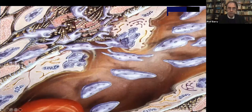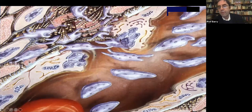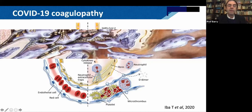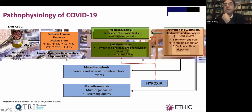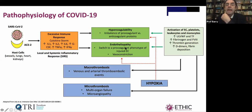This slide, which came from the Lancet, suggests why people are getting clots with SARS. What's happening is activation of macrophages with neutrophil extracellular traps. The initial thought was that this caused microthrombi in the alveoli, but this has been elucidated to be a much larger problem. Host cells in vessels, lungs, heart, and kidney via the ACE receptor elicit an excessive immune response — the so-called cytokine storm — with local and systemic inflammatory response. That leads to hypercoagulability, endotheliopathy, or endotheliitis. The endothelial cell becomes very procoagulant and may cause vasoconstriction, ultimately leading to hypoxia, macrothrombosis, and microthrombosis with multi-organ failure.